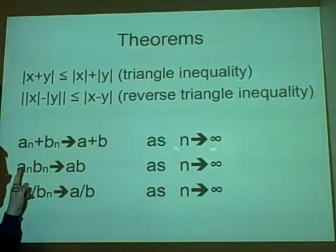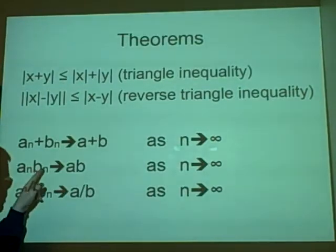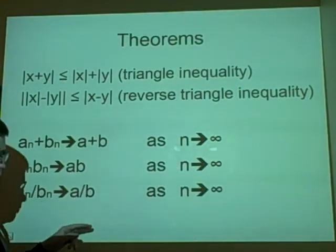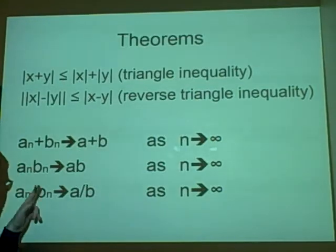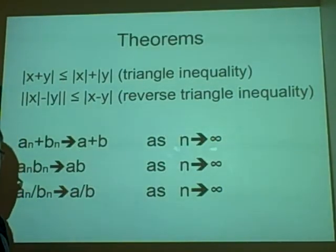Same here and same here. A_n times b_n goes towards ab, and a_n divided by b_n goes towards a over b.